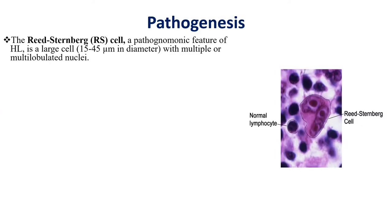The Reed-Sternberg cell is a pathognomonic feature of Hodgkin's lymphoma. These cells are large cells, 15 to 45 micrometers in diameter, with multiple or multi-lobulated nucleoli, as you can see on the image.